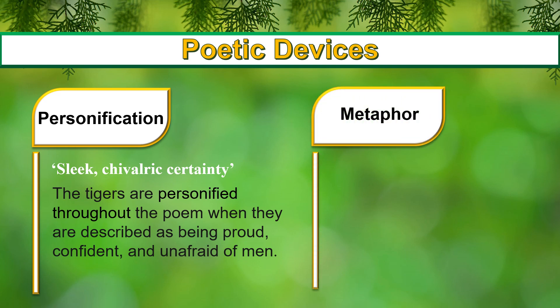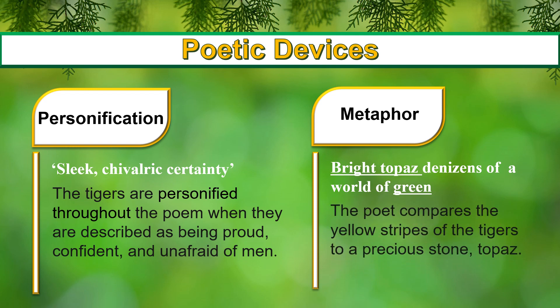Next, we have metaphor. A metaphor is a figure of speech used to make a comparison between two things that aren't alike but do have something in common. Unlike a simile where two things are compared using 'like' or 'as,' a metaphor's comparison is more indirect — it is an implied simile. 'Bright topaz denizens of a world of green' — the poet compares the yellow stripes of the tigers to a precious stone. The metaphor 'bright topaz' depicts the shining yellow complexion of Aunt Jennifer's tigers.